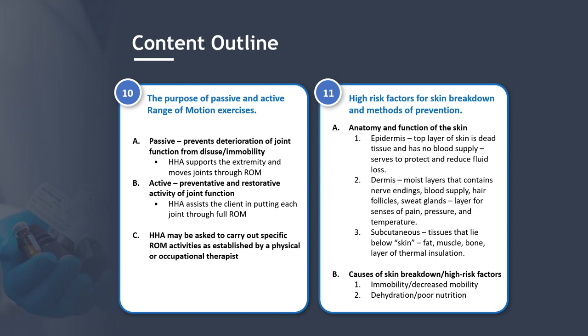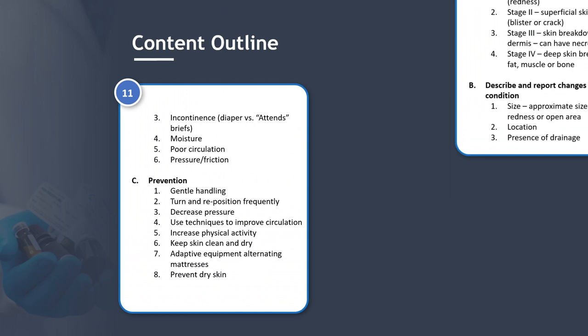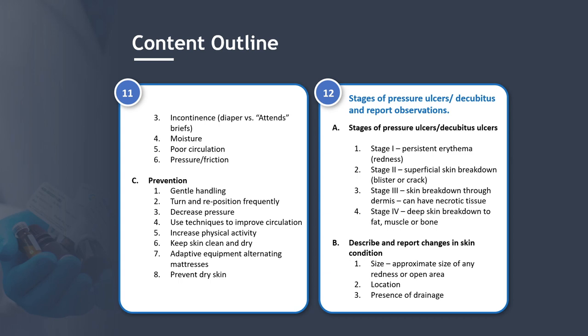Causes of skin breakdown and high risk factors include: immobility or decreased mobility; dehydration or poor nutrition; incontinence — diapers, attends, and briefs; moisture; poor circulation; and pressure and/or friction. Prevention strategies include gentle handling, turning and repositioning frequently, decreasing pressure, using techniques to improve circulation, increasing physical activity, keeping the skin clean and dry, using adaptive equipment such as alternating mattresses, and preventing dry skin.